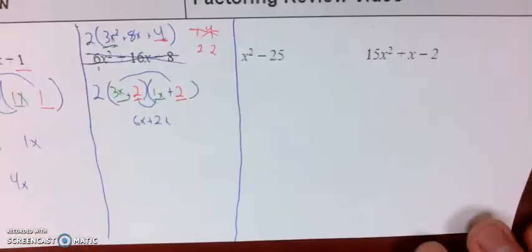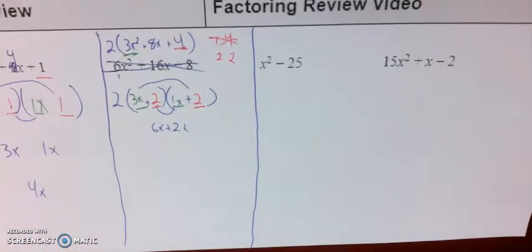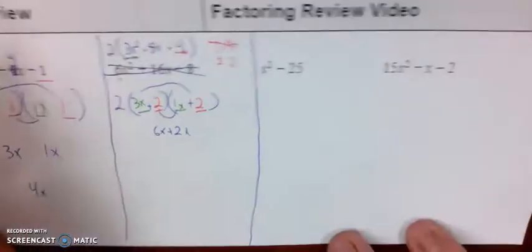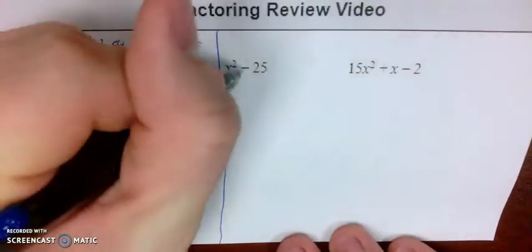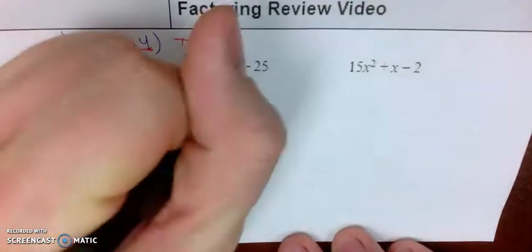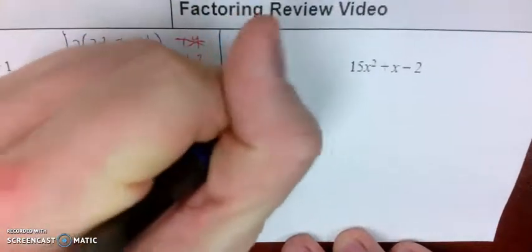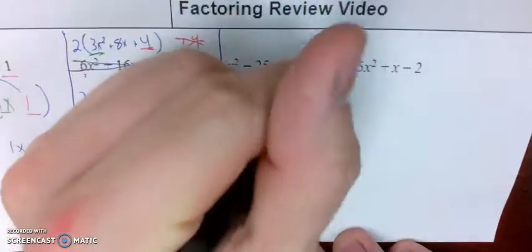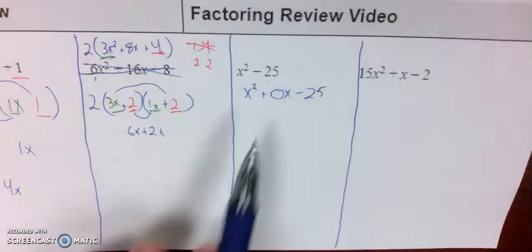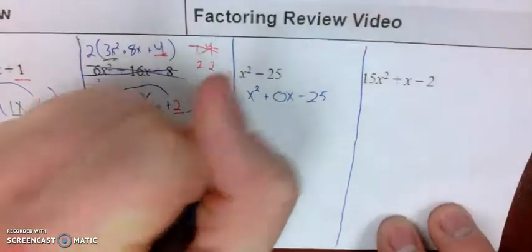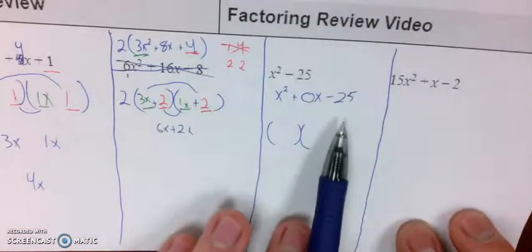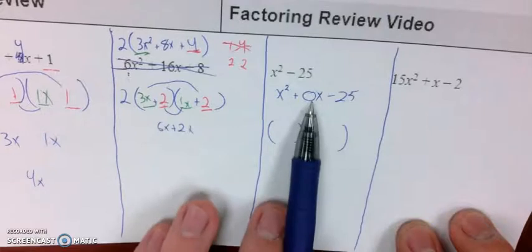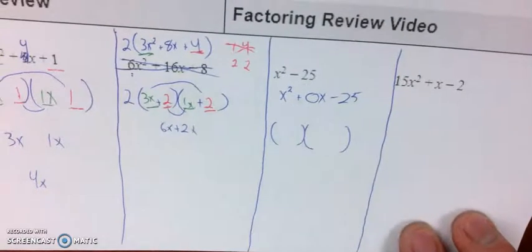Next one, x squared minus 25. This is what's called a difference of squares pattern. Anytime you see only two terms separated by a minus sign, this is where our head should be leading. You could put a 0x in the middle if that helps you visualize things. We'd still want to break this apart into two parenthesis chunks with terms that would multiply to be negative 25 but add up to 0.